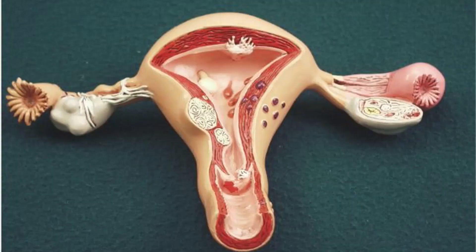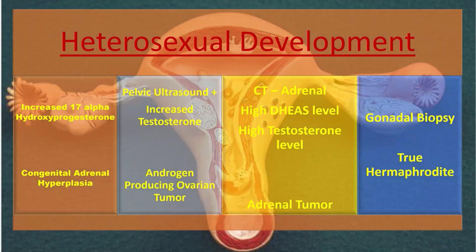For diagnosing heterosexual development: elevated 17-hydroxyprogesterone indicates congenital adrenal hyperplasia; increased testosterone on pelvic ultrasound indicates an androgen-producing ovarian tumor; CT scan showing adrenal tumor along with high DHEA and high testosterone indicates adrenal tumor; gonadal biopsy is helpful to diagnose true hermaphrodites.